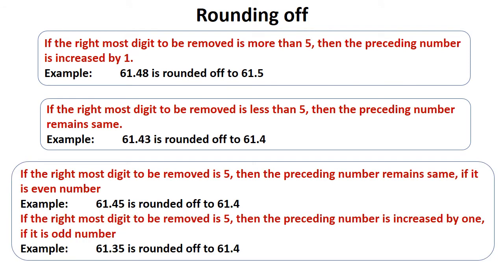If the rightmost digit to be removed is 5, then the preceding number remains the same if it is an even number. For example, 61.45 is rounded off to 61.4, because the preceding number 4 is even, so it remains the same. But if the rightmost digit to be removed is 5 and the preceding number is odd, it is increased by 1. For example, in 61.35, the preceding number 3 is odd, so it is rounded off to 61.4, as 3 is increased by 1 to become 4.